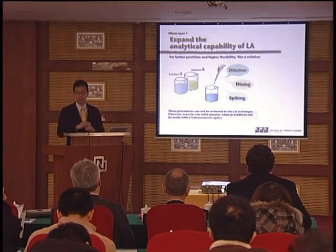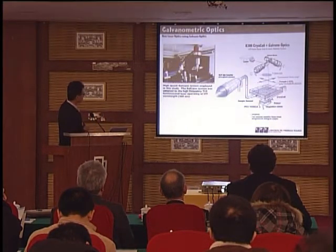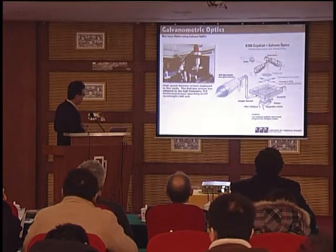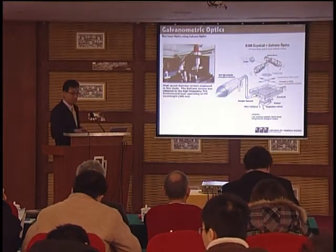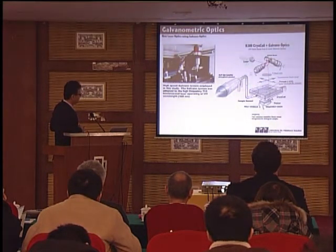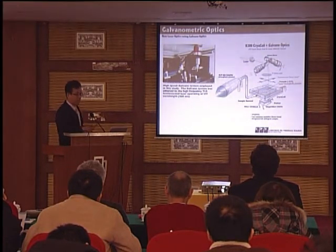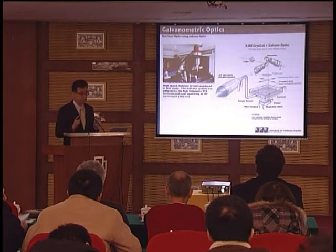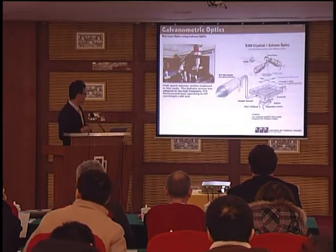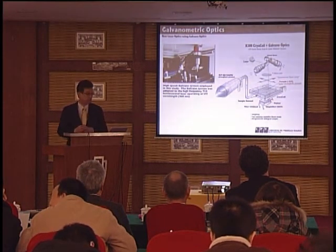Galvanometric optics is very important. It is quite simple — composed of two rotation mirrors. This mirror is rotating very precisely, so we can change the ablation pit at very high speed. The time required for changing the ablation pit is faster than 10 milliseconds. So we can switch the ablation pit quite fast, enabling so many operation modes using galvanometric optics.